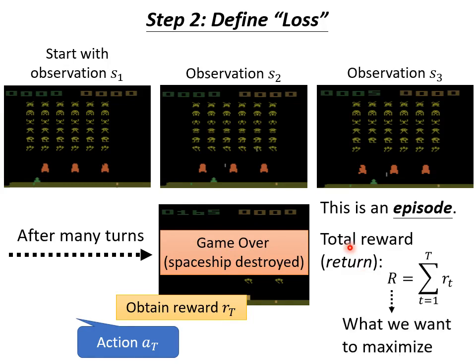The total reward is the target that we want to maximize. This is different from loss — loss should be as small as possible, but the total reward should be as big as possible. In the context of RL, we can use the negative total reward as the loss. Since we want to maximize the total reward, we can just minimize the negative total reward — we treat negative total reward as the loss in RL.